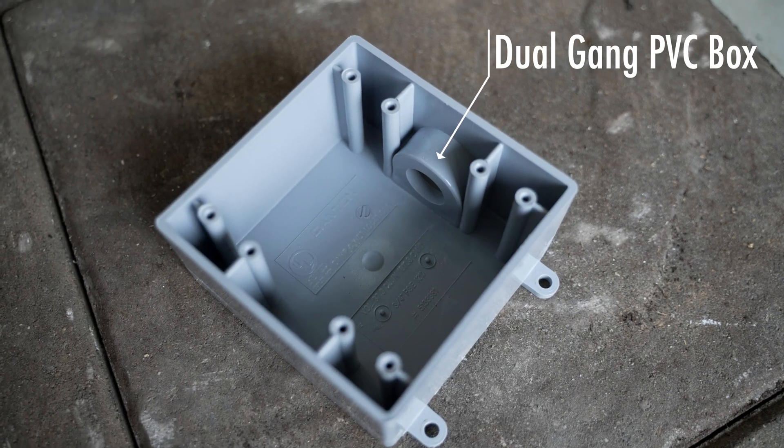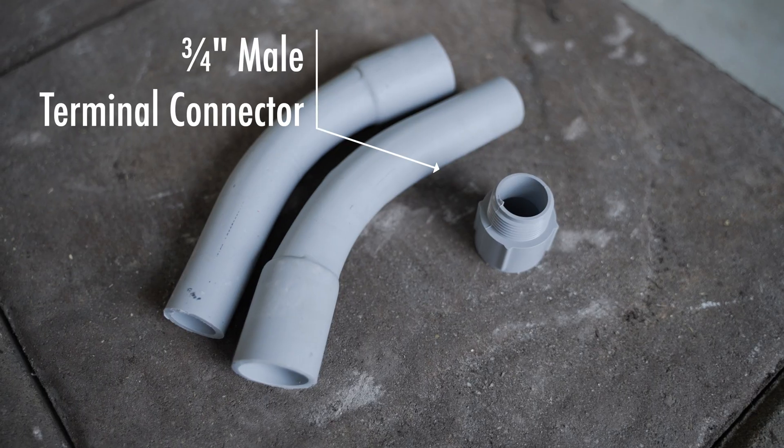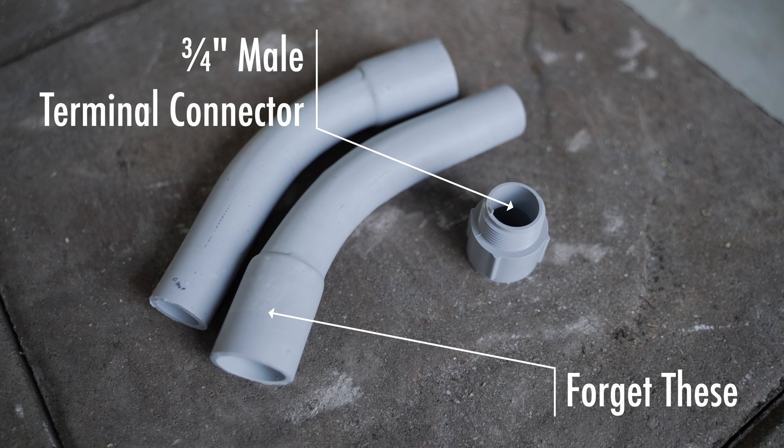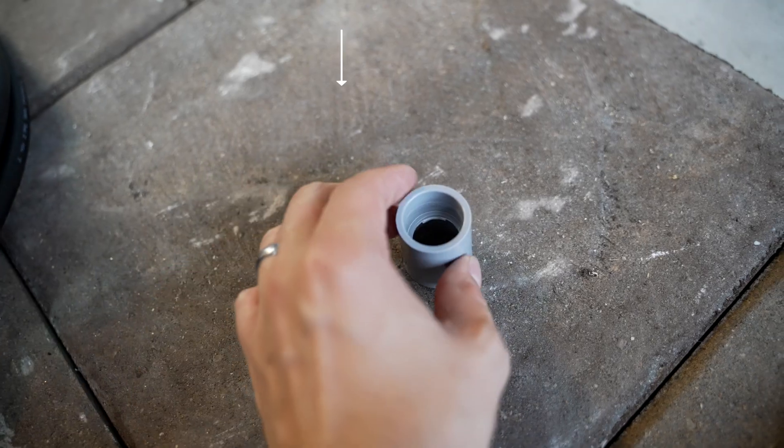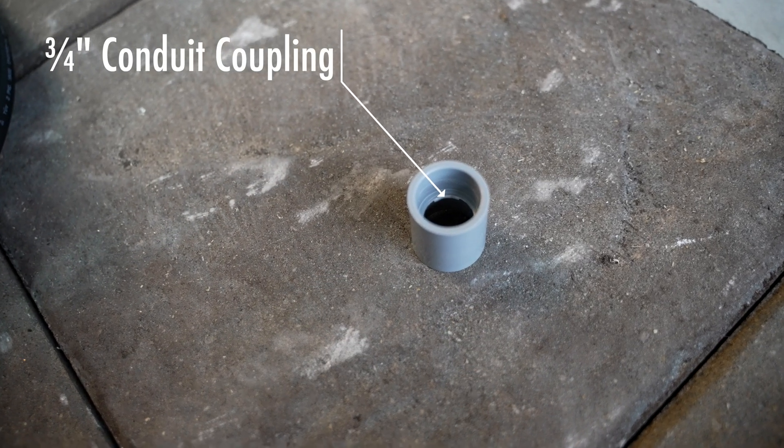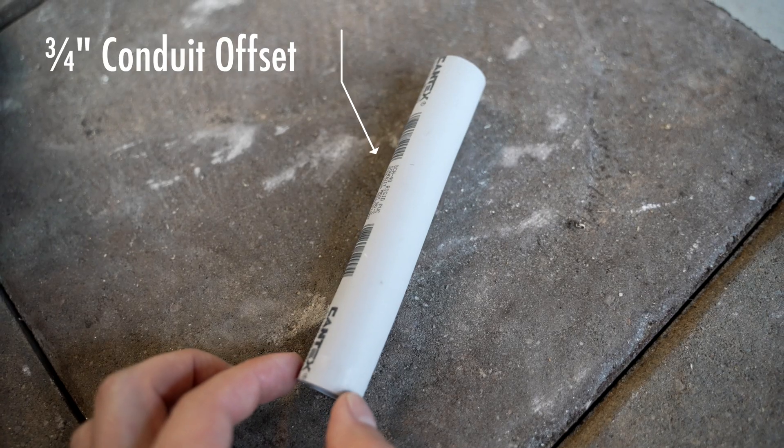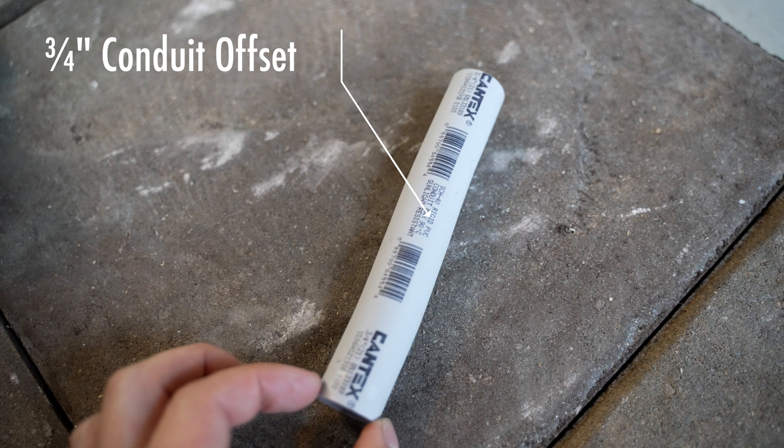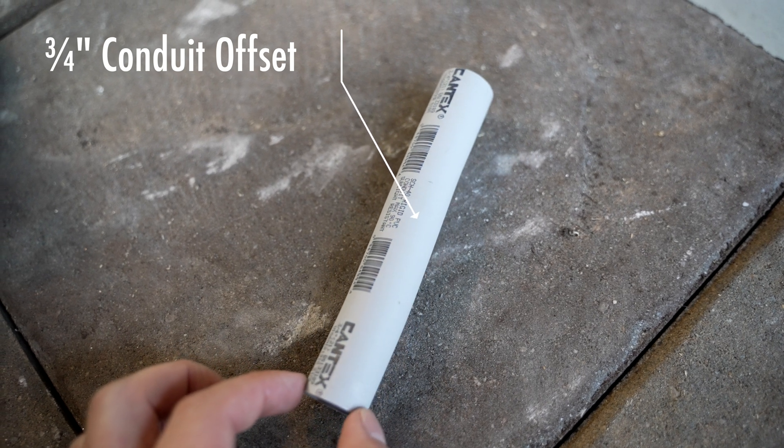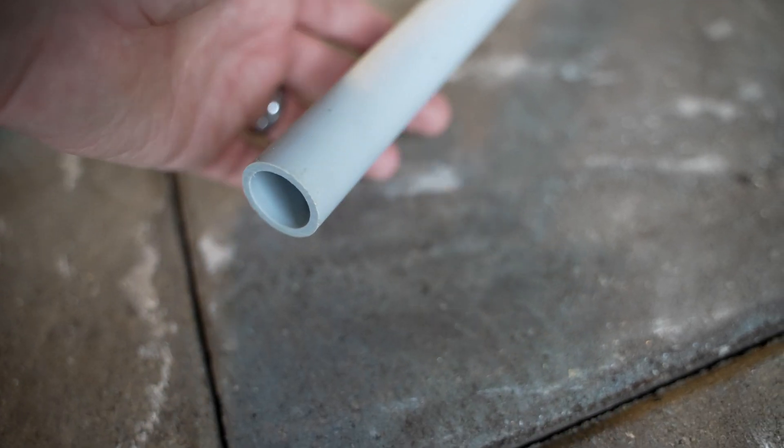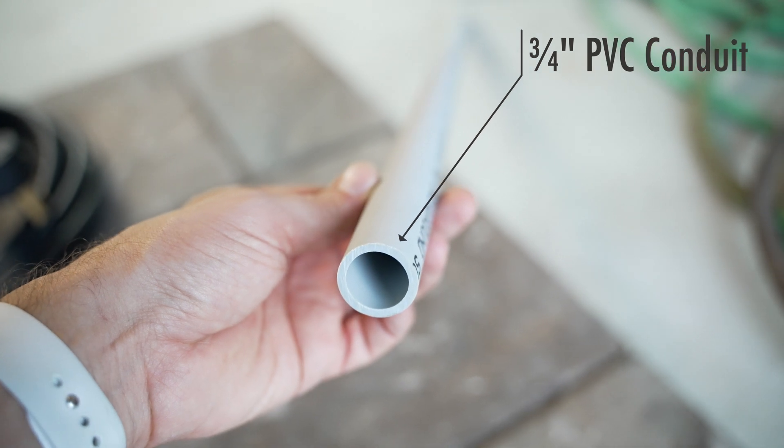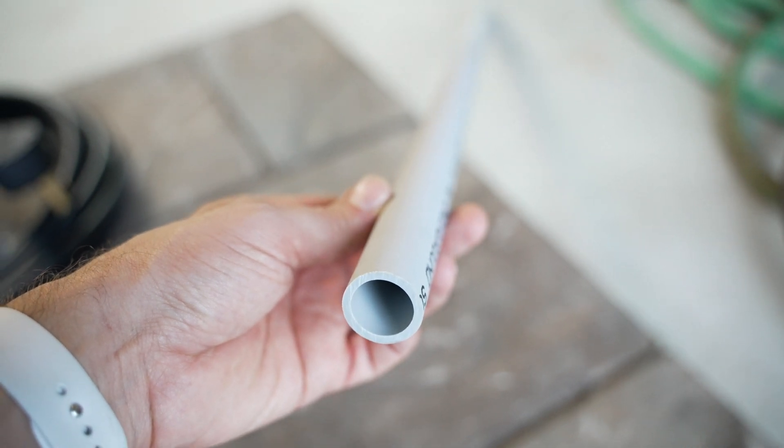You're going to need a dual gang PVC box. There is a connector to connect into the electric panel, a coupling for connecting some of the three-quarter inch conduits together, and then I found this nifty conduit offset. That's just to move the conduit away from existing conduits that were there. And then of course we have some three-quarter inch PVC conduit schedule 40.